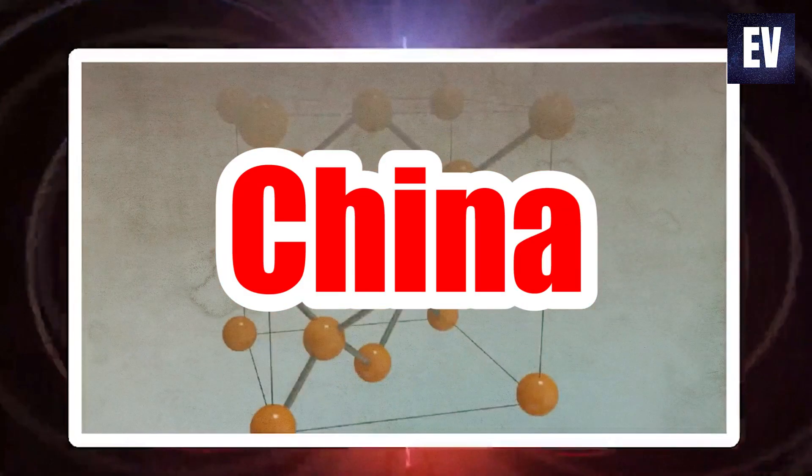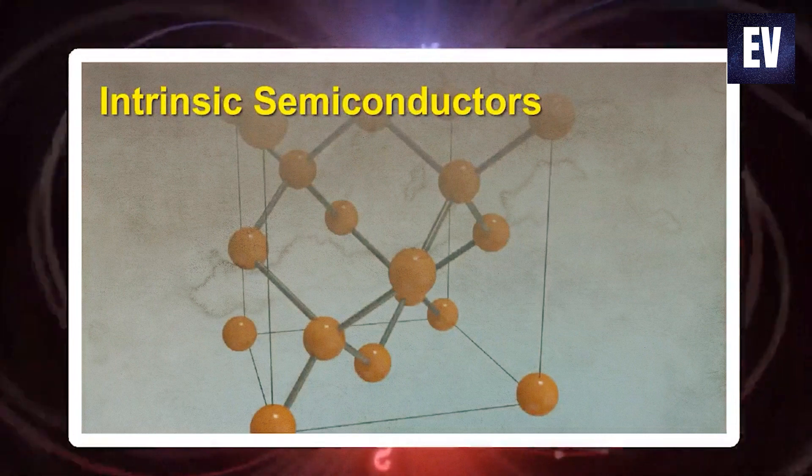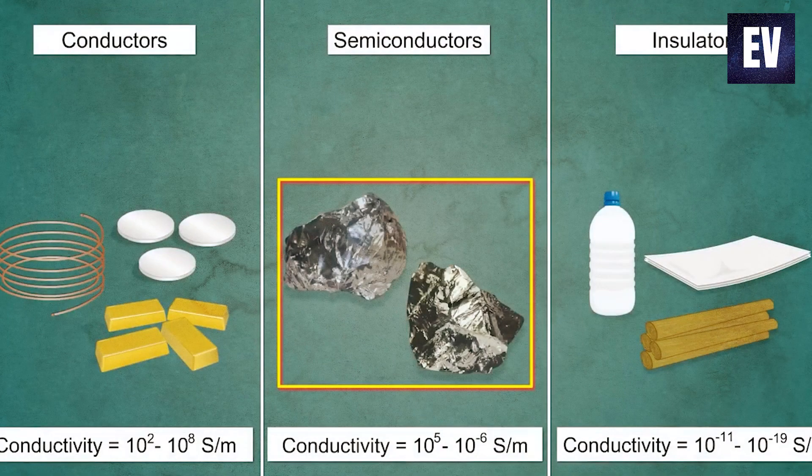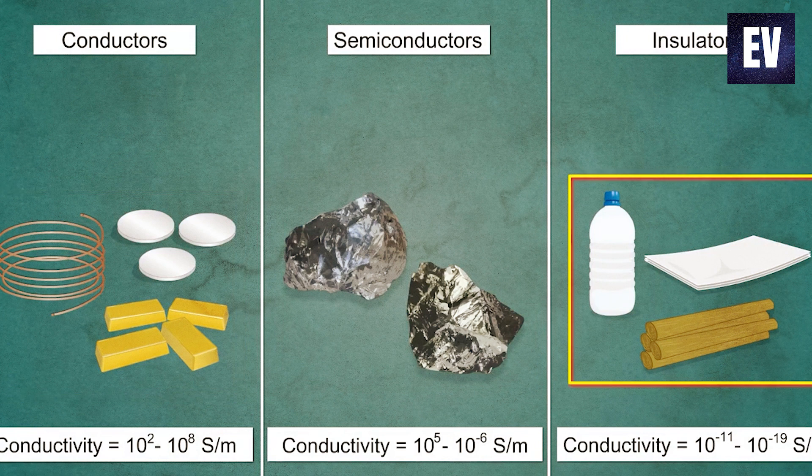China has chosen to take affairs into its own hands and build its own semiconductors in response to the global chip shortage, which is causing output to slow down across all industries.